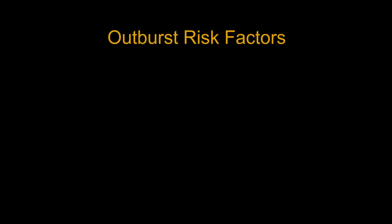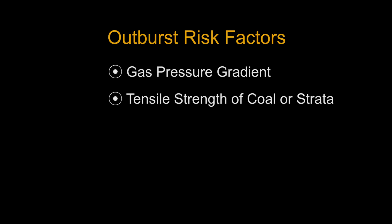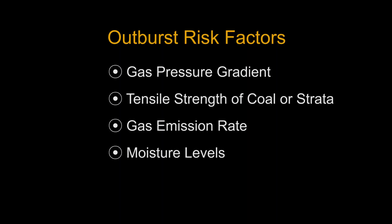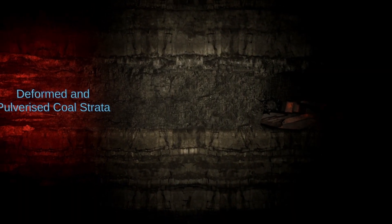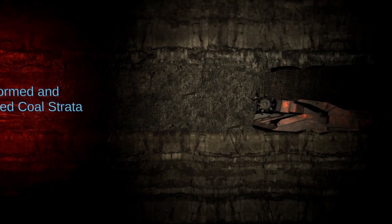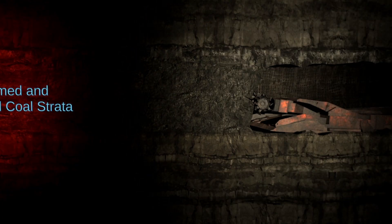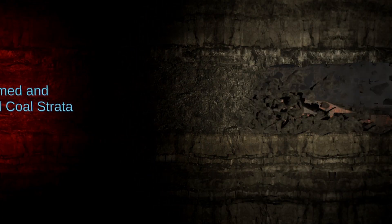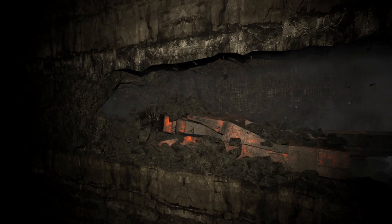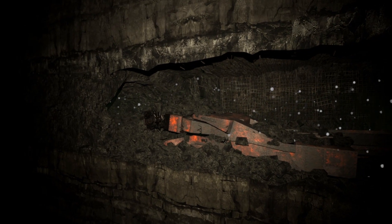The outburst risk factors include the gas pressure gradient, the tensile strength of the coal or the strata, the gas emission rate, moisture levels, and the depth or stress levels. When the force of the gas pressure is unable to be contained by the coal strength or the strata, there is an outburst. The rate of desorption of the gas in the coal depends on the coal particle size and its structure.